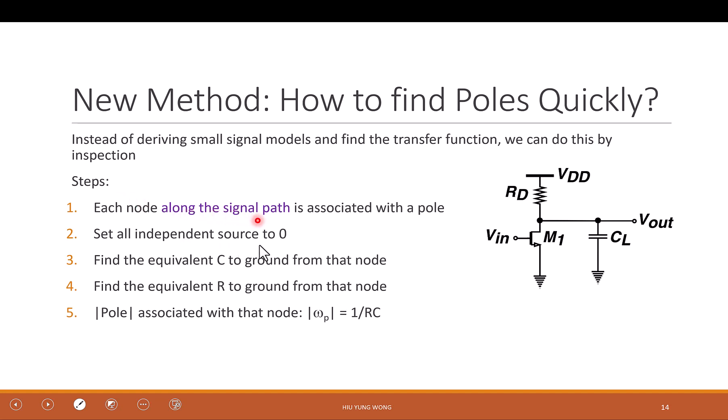Each node along the signal path is associated with a pole. So first let's identify the signal path. It goes from Vin and then to Vout. This is the signal path. Along this path, how many nodes do we have?